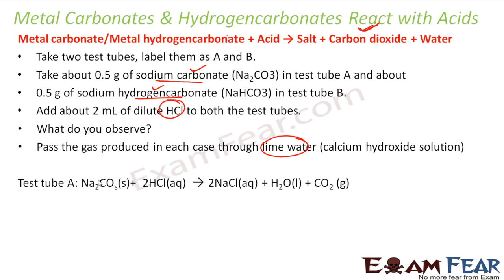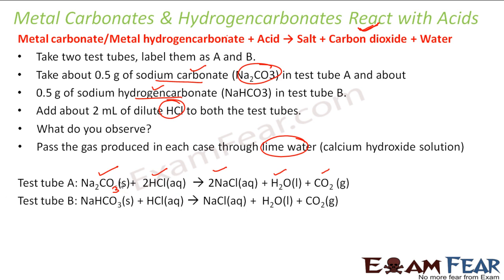The reaction in test tube A: sodium carbonate (Na₂CO₃) plus HCl gives NaCl plus water plus carbon dioxide. For test tube B, sodium hydrogen carbonate plus HCl gives NaCl plus H₂O plus CO₂.